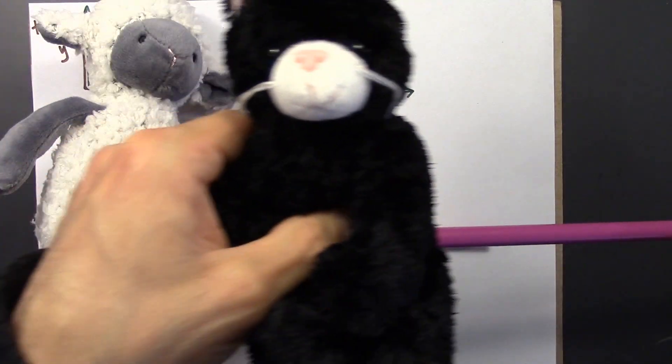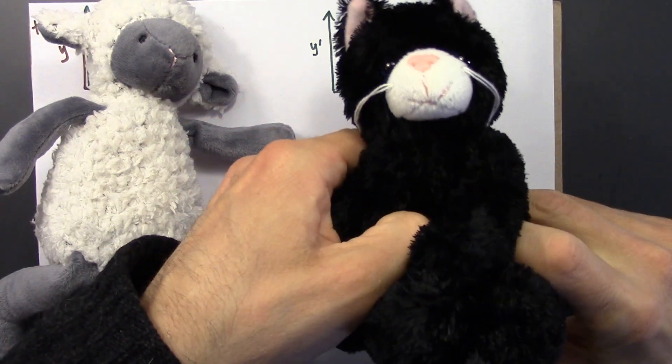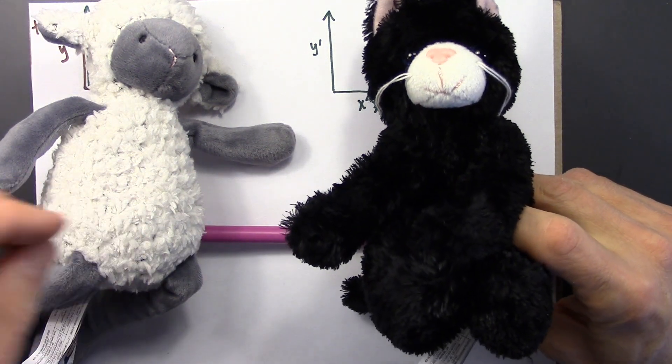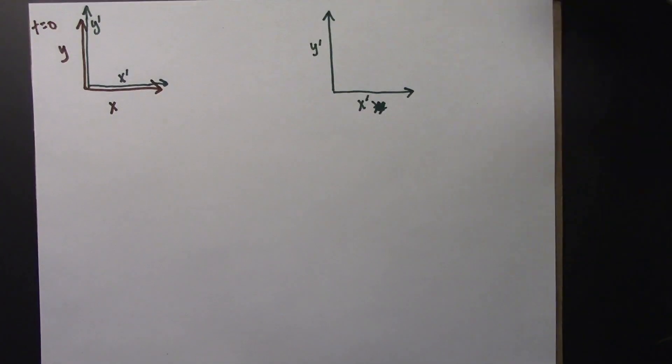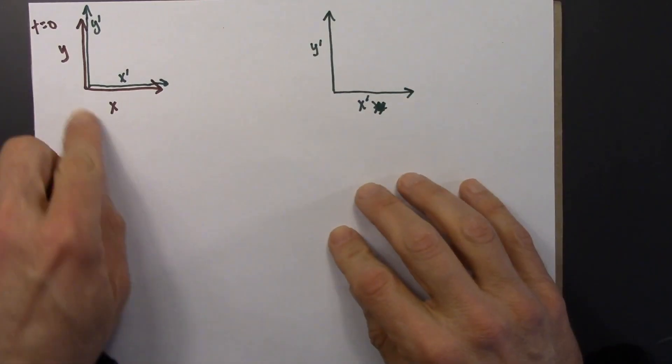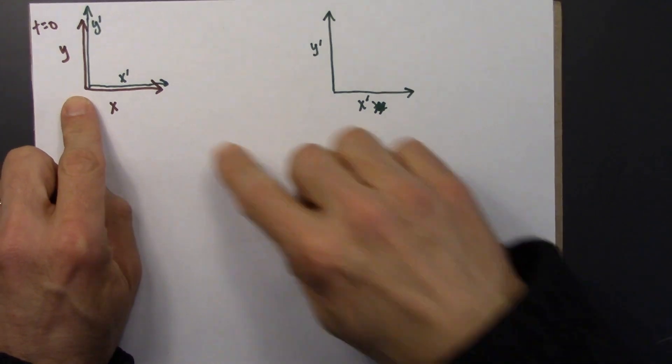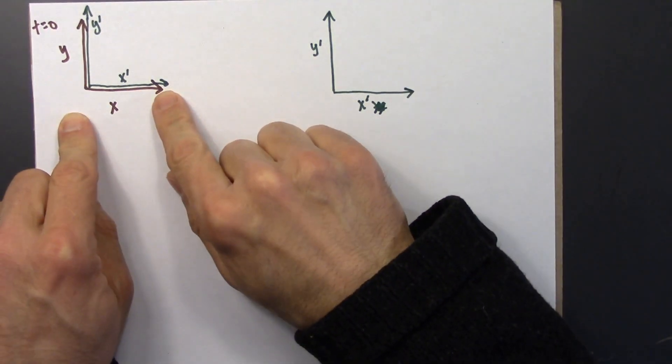And then a little while later, because Beowulf is moving, this reference frame would be over here. So here's a drawing of this state of affairs. At time t equals zero, the two reference frames are right on top of each other.